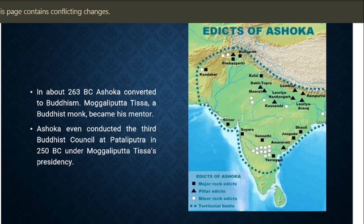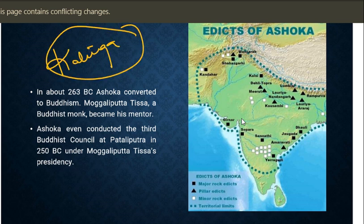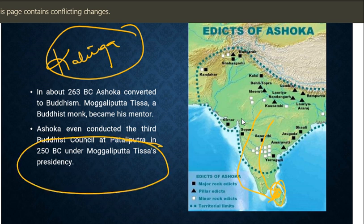After his conversion Ashoka renounced warfare and erected a lot of edicts and inscriptions on which he proclaimed Dhamma. He sent missionaries to many places and sent his children to Sri Lanka to spread Buddhism. The Third Buddhist Council happened under Ashoka. So to summarize: the First Buddhist Council was under Ajatashatru, the Second under Kalashoka, and the Third under Ashoka.